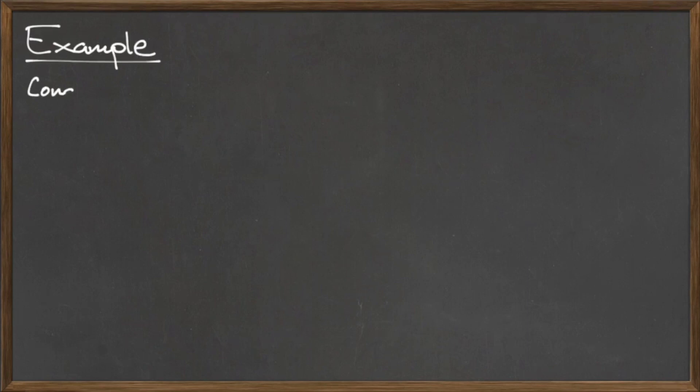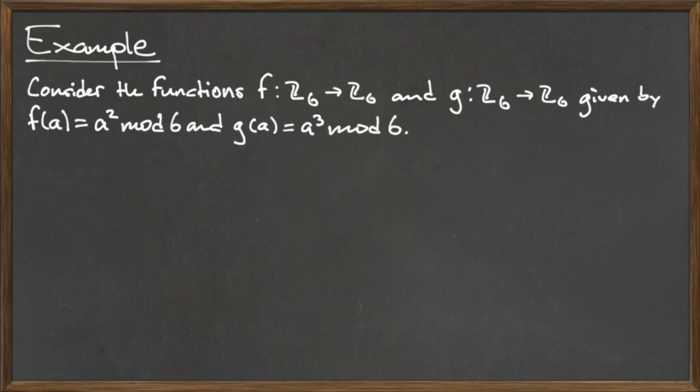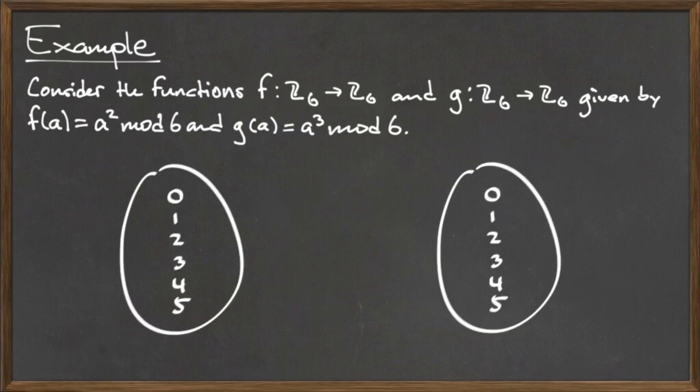One of the best ways to visualize functions is through the use of diagrams. For example, consider the functions f from Z₆ to Z₆ and g from Z₆ to Z₆, given by f(a) = a² mod 6 and g(a) = a³ mod 6.